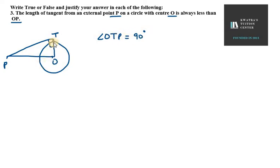because the angle between tangent and radius is 90 degrees. Therefore we can say that triangle OTP is a right angle triangle.